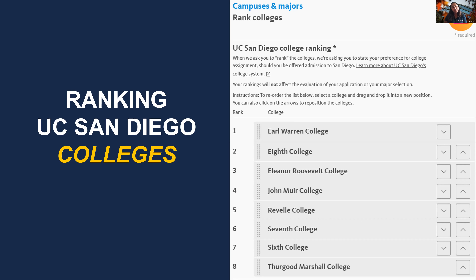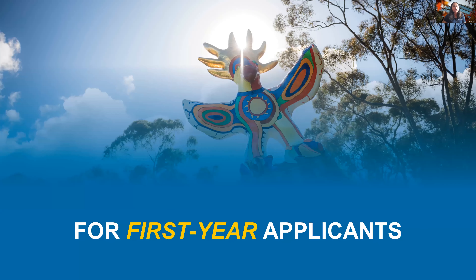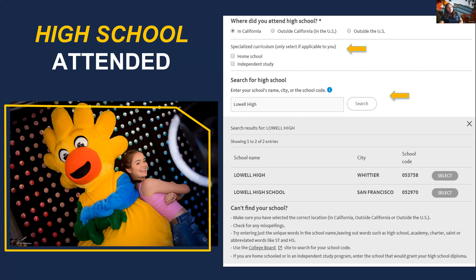Now for first-year applicant requirements. Students must list every school attended beginning with ninth grade, even if ninth grade was in a middle school. Students can select a specialized curriculum and search for schools by name, city, or CEEB code. If a school can't be found, it can be added by typing the full name and clicking add.